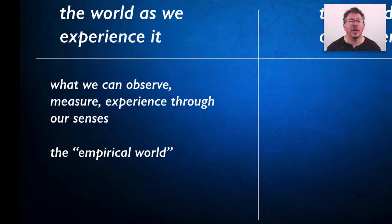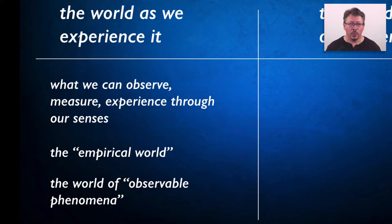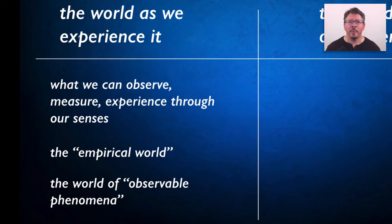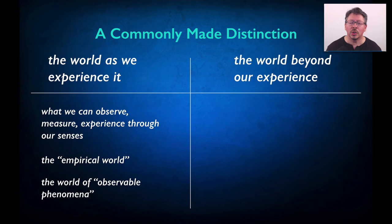We also use the word observable and the word phenomena to describe features of the observable world, the world of experience. The word phenomenon actually just means appearances — it's what we're aware of in experience. We talk about observable phenomena in science, and that might sound redundant, but it's a reminder that the appearances we're concerned with in science are appearances that are observable, and in that sense they're publicly accessible to a suitably situated perceiver. Now we contrast the world of appearances, the world as we experience it,